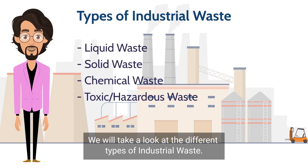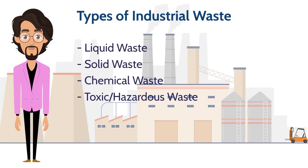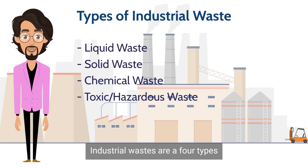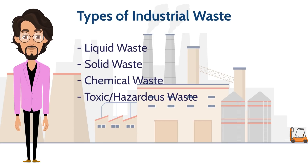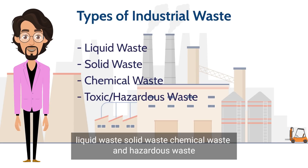Now we will take a look at the different types of industrial waste. Industrial wastes are of four types: liquid waste, solid waste, chemical waste, and hazardous waste.